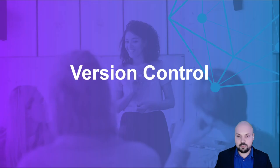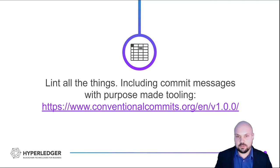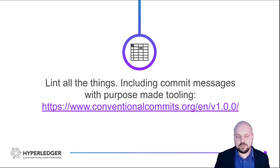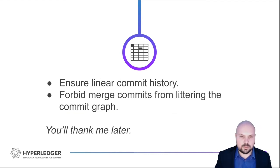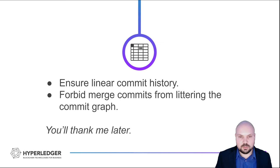Version control is very important. You want to lint all the things, including commit messages, with purpose-made tooling. I like to use the conventional commit scheme, which gives you a loose but structured way of writing commit messages that allows other tools to generate changelogs for releases automatically straight from the commit log. This feeds into release automation being great, as you want to reduce the number of manual chores to the absolute minimum. You also want to make sure that you have a linear commit history on your main branch, meaning there should be no zigzagging merge commits, which would make it difficult to trace who made what change, when, and why.